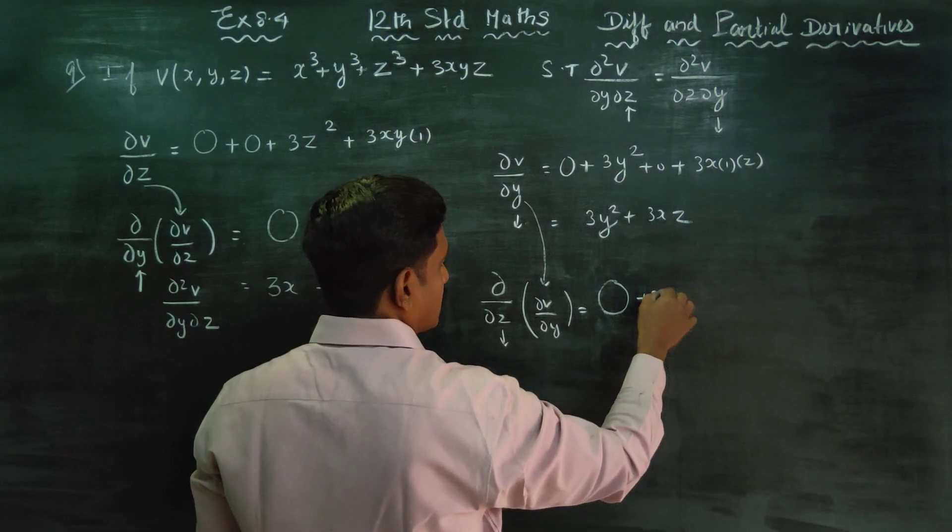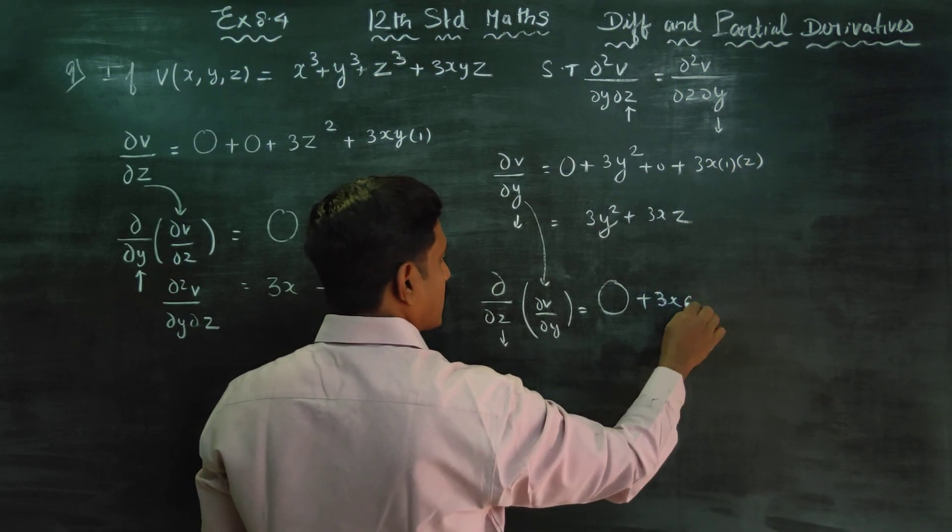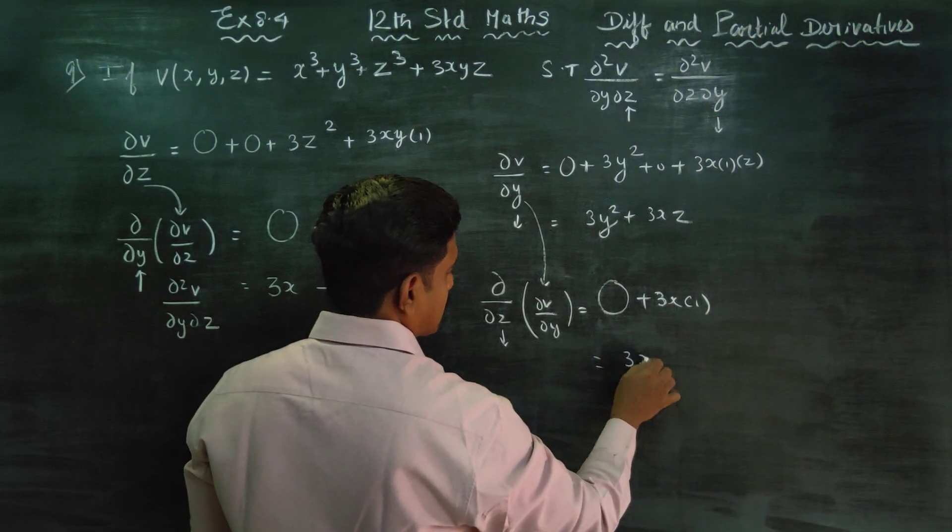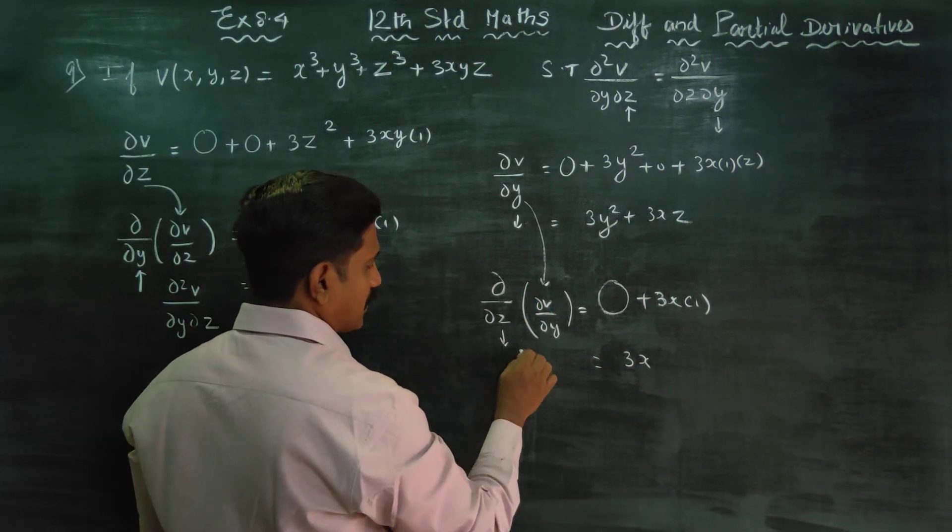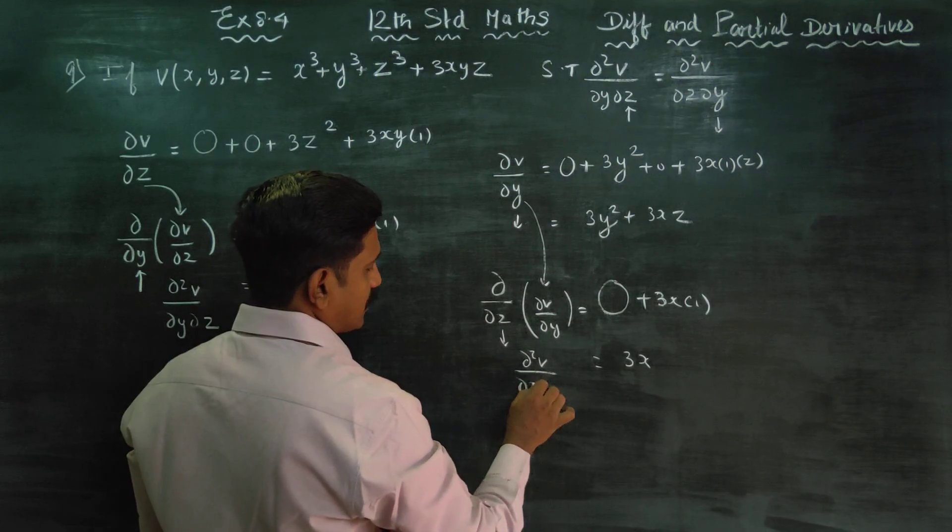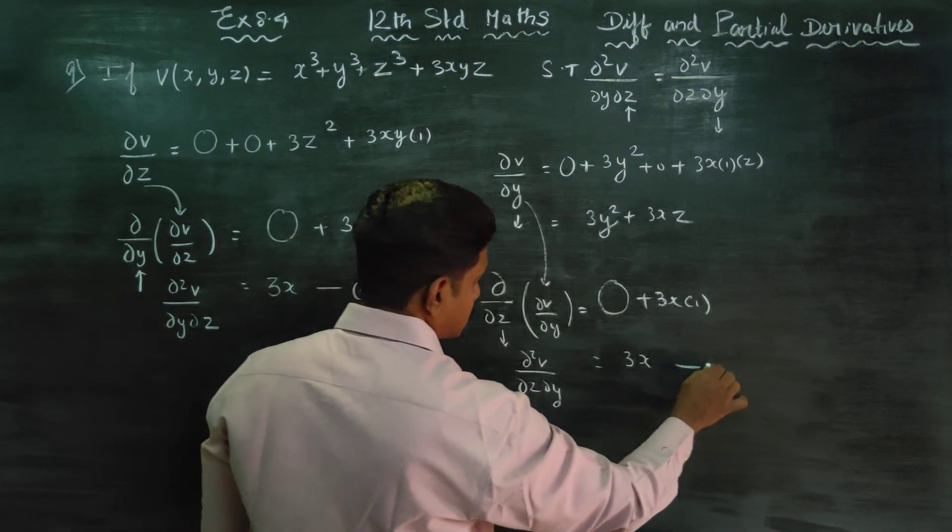3x constant, 3y constant, x constant. Z gives 1. Therefore, my answer is 3x. It's the same thing: d²v/dz dy. It's the result number 2.